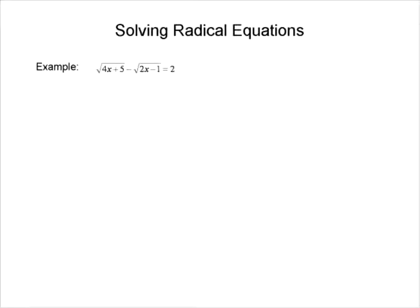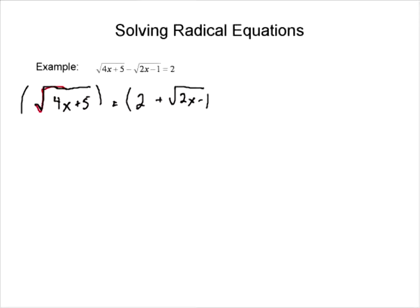So we're going to get the square root of 4x plus 5, and we're going to get is equal to 2 plus square root of 2x minus 1. Now, we've isolated for the radical — the next thing is to square both sides.